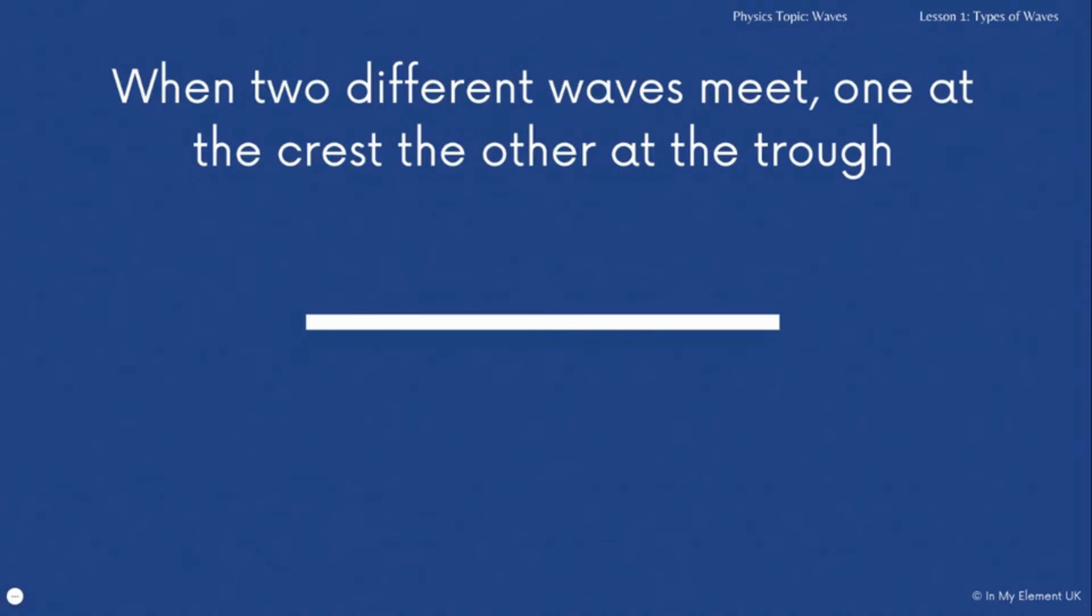Remember that's only if they're completely equal, so the likelihood of that isn't extremely high, but we need to give you those three different examples. You need to know what happens if two identical crests meet, what happens if two identical troughs meet, and what happens if a crest and a trough meet.